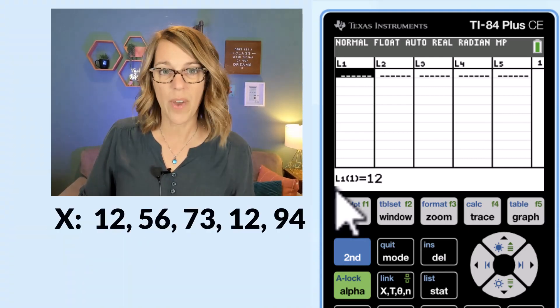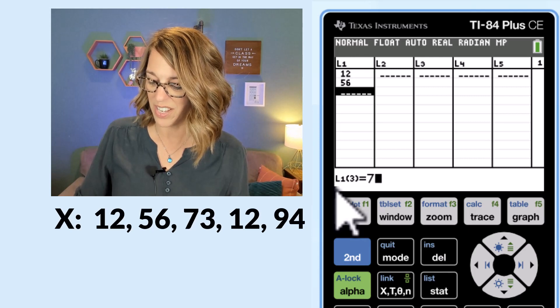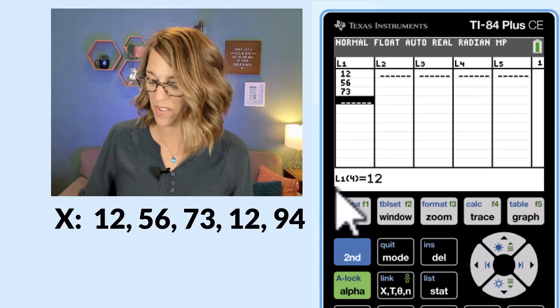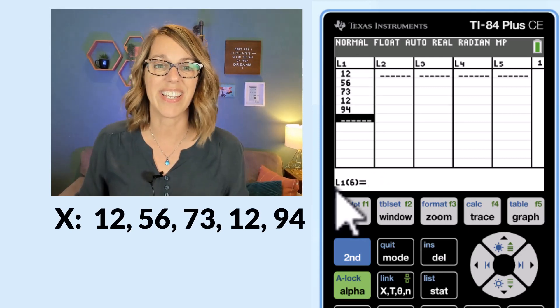So we're going to do 12 enter, 56 enter, 73 enter, 12 enter, and 94.